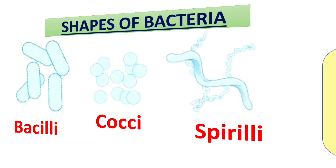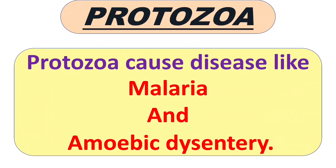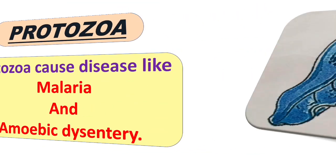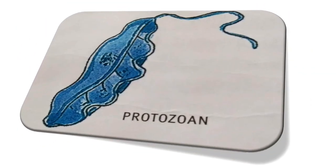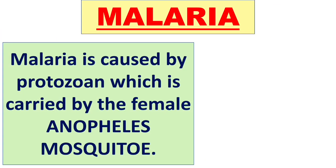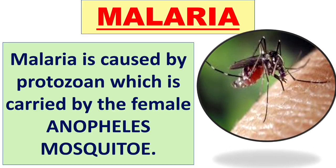Next is protozoa. Protozoa cause diseases like malaria and amoebic dysentery. This is a picture of a protozoan. Malaria is caused by a protozoan which is carried by the female Anopheles mosquito.